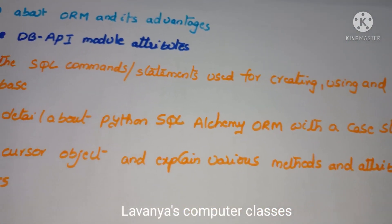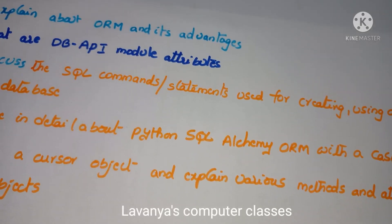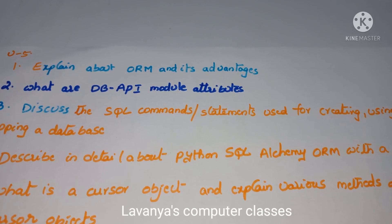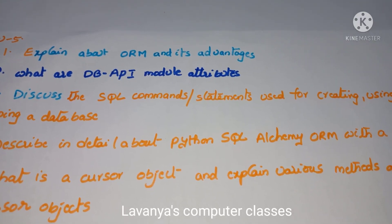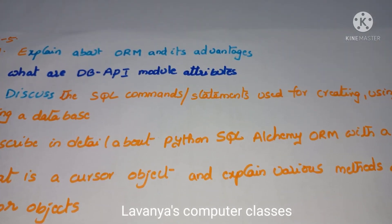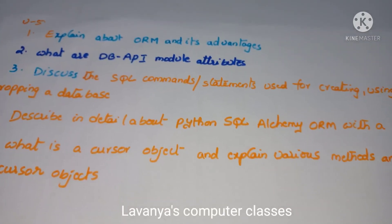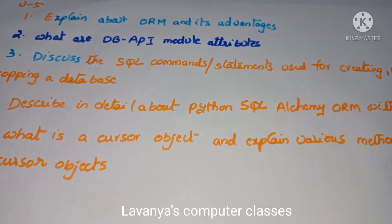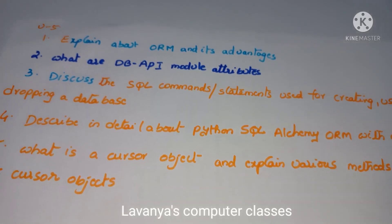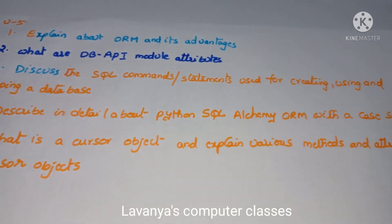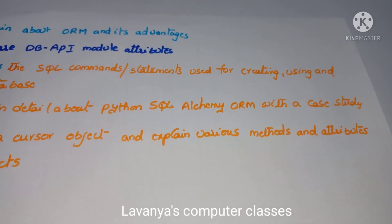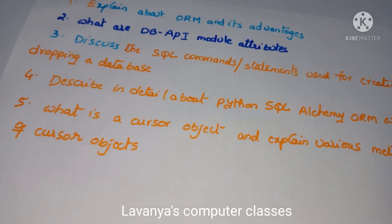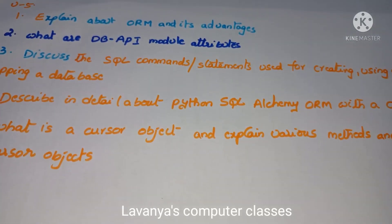Unit 5 covers database programming. Important questions include: explain about ORM (Object Relational Mapper) and its advantages; what are the DB-API module attributes; discuss the SQL commands or statements used for creating, using, and dropping a database; describe in detail about Python SQLAlchemy ORM with a case study; and what is a cursor object — explain the various methods and attributes of cursor objects.